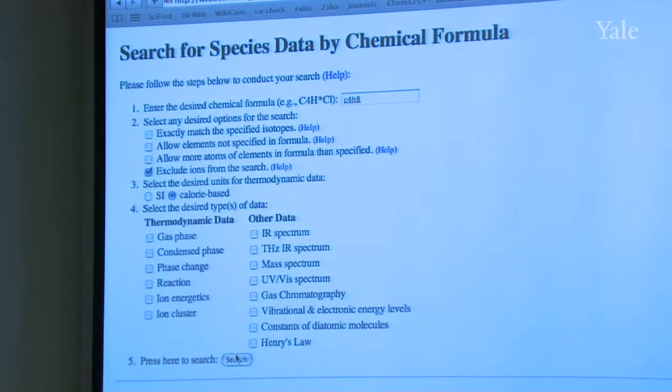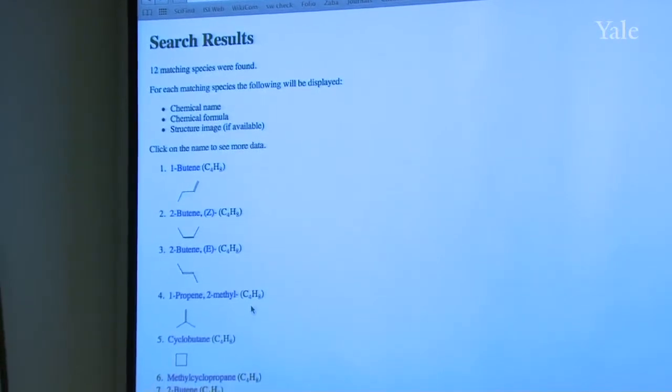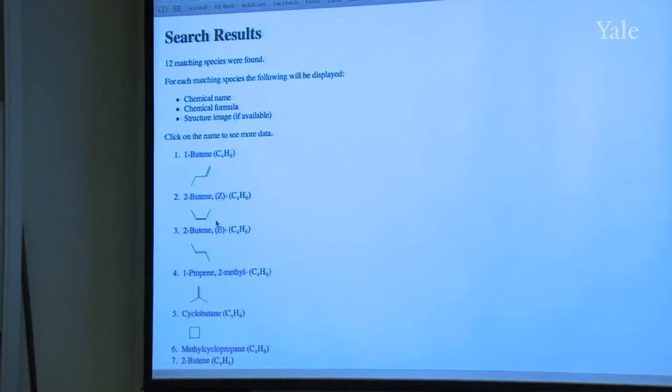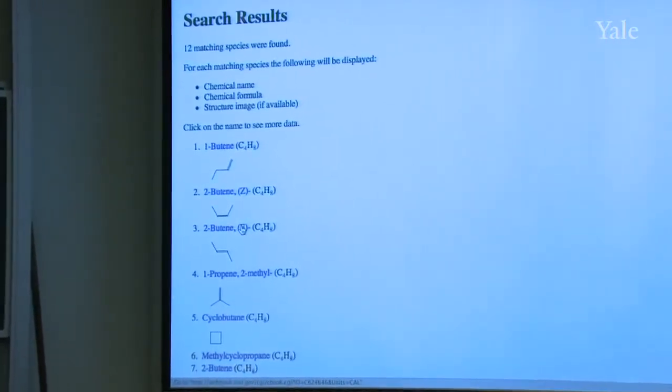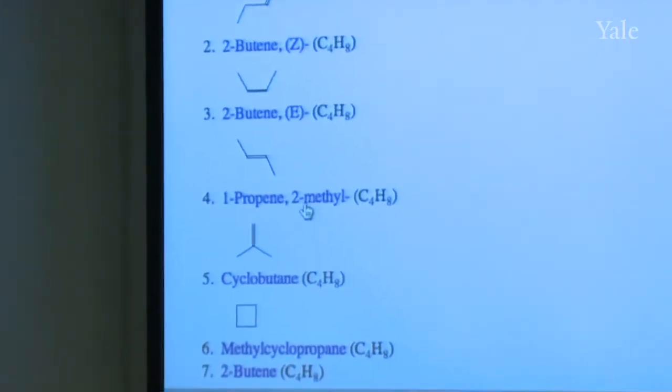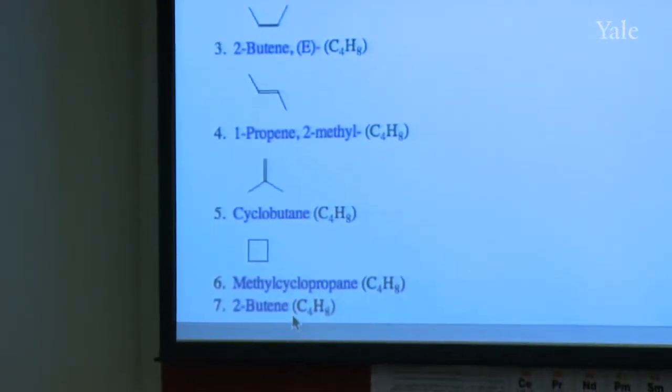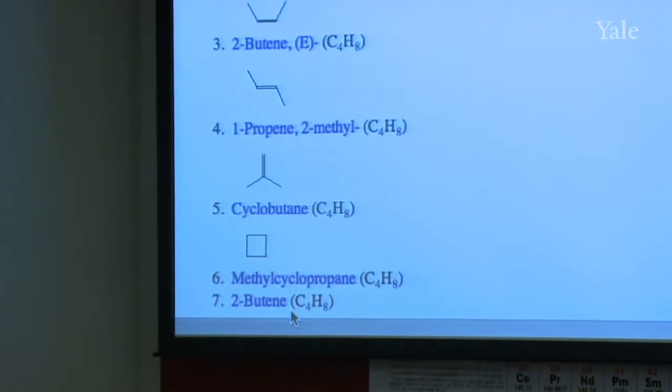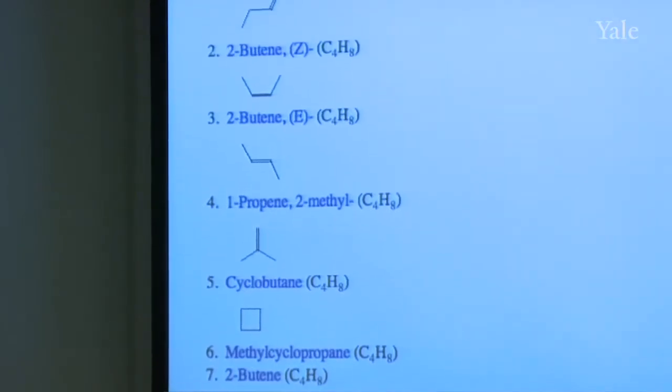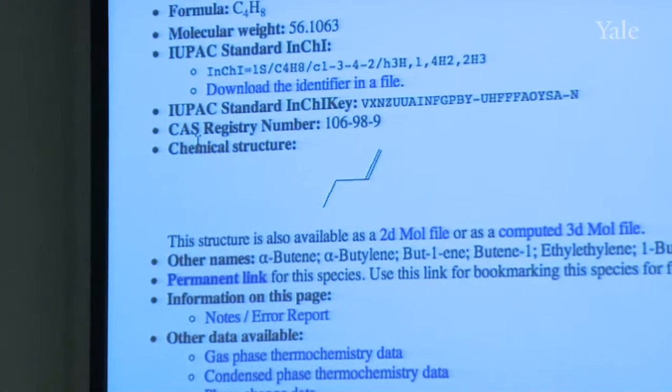Then you can search in that web book by different criteria, and the easy one is formula, for our purposes. Let's suppose we're interested in butenes. So we have C4H8. And let's work in kilocalories, not in the SI units. So let's search and see what we can find. So here's what I just found. So I have 1-butene, 2-butene in two flavors, Z and E, cis and trans. Then I have 2-methyl-1-propene in isomer, and cyclobutane, also methyl cyclopropane.